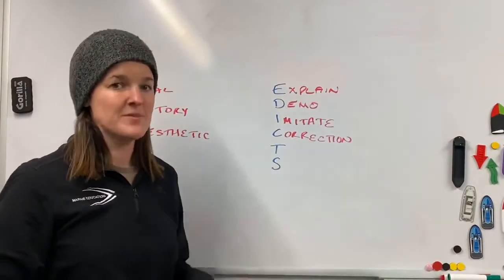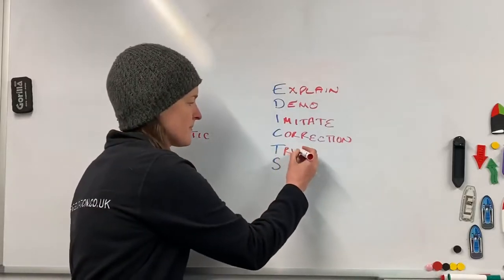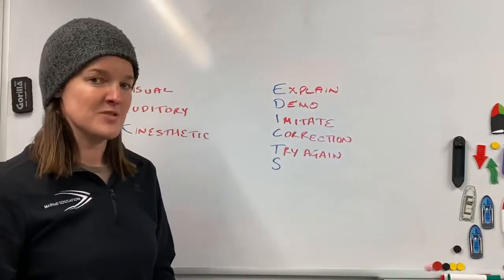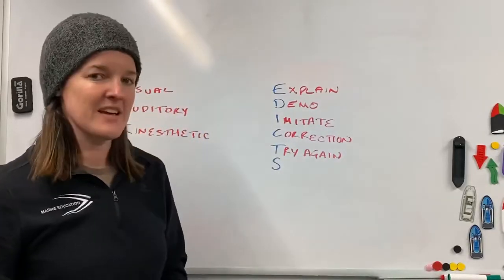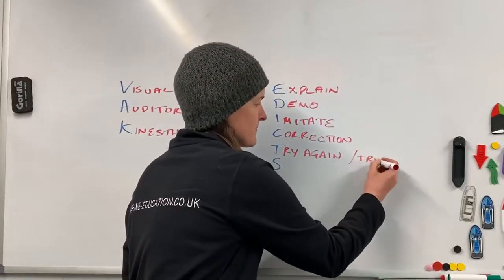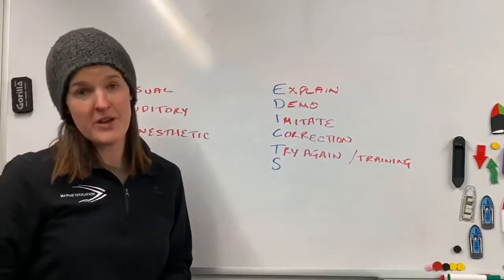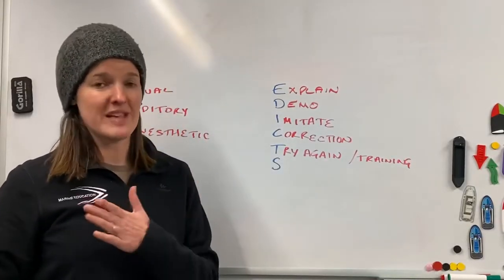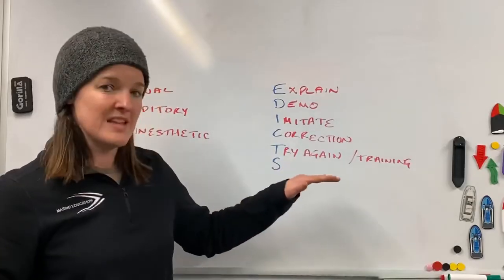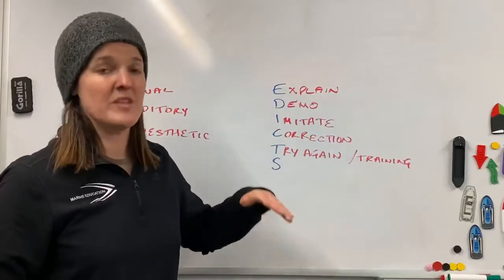Once they have those top tips, you're then going to let them try again. If you have a copy of the Power Schemes Instructor Handbook, you'll see that T in there is for Training, which basically means the same thing. Let them have another go, let them have another three goes, whatever it requires for them to be able to get to the standard of the RYA syllabus. This may mean they'll have a couple of goes, then they'll slip back and you need to correct them again.